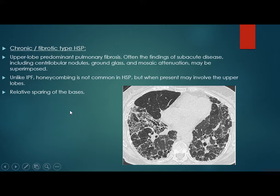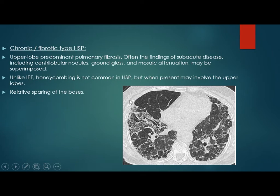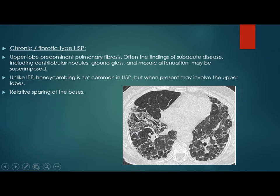The chronic or fibrotic type predominantly shows pulmonary fibrosis. The subacute findings — centrilobular nodules, ground glass, mosaic — can coexist with fibrosis. Unlike idiopathic pulmonary fibrosis, honeycombing is less common and this involves the upper lobes — in idiopathic pulmonary fibrosis it mainly involves the lower lobes, with relative sparing of the bases. If we see fibrosis in the upper lobes, we suggest chronic hypersensitivity rather than idiopathic. We see tractional bronchiectasis, less honeycombing, with reticulation and intralobular and interlobular thickening.